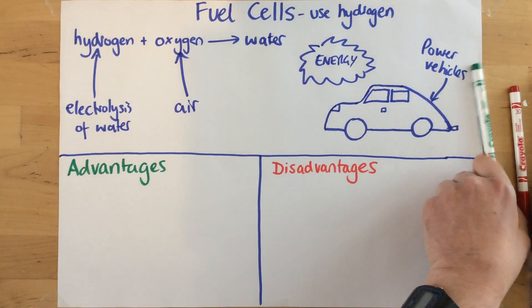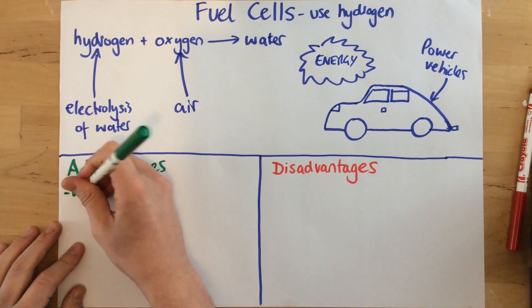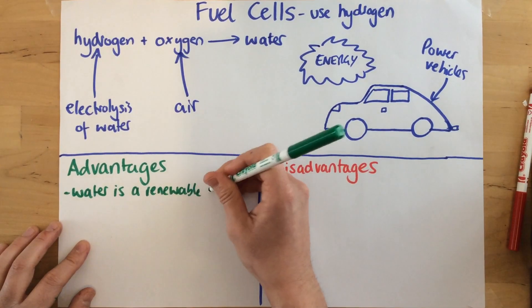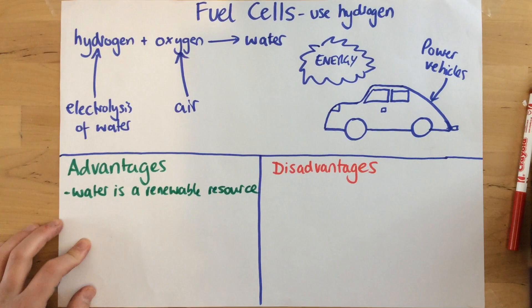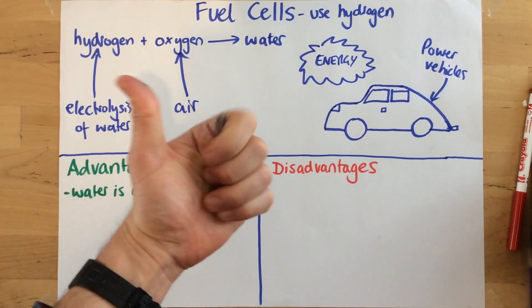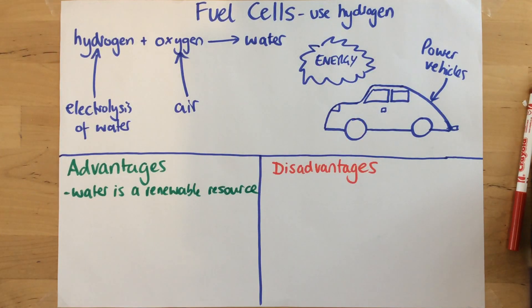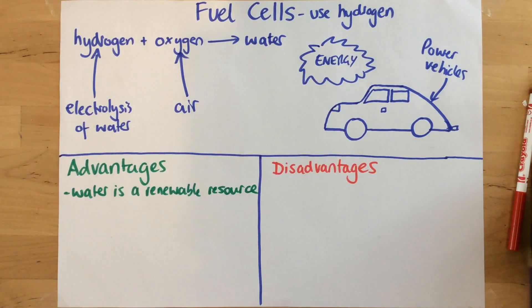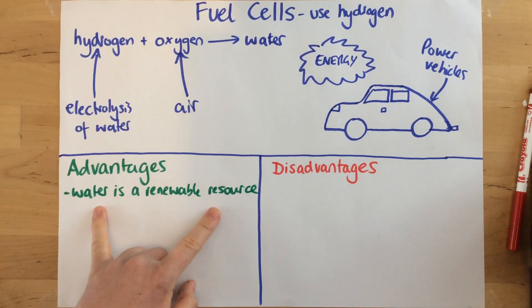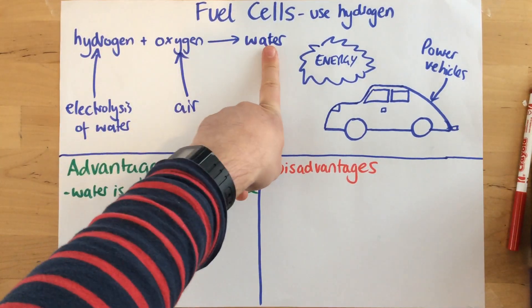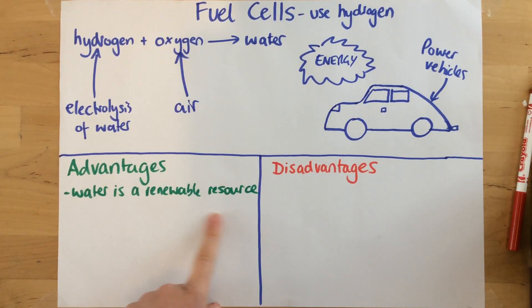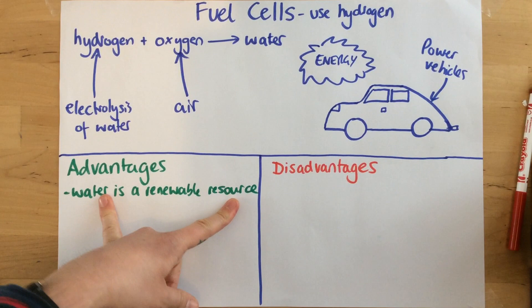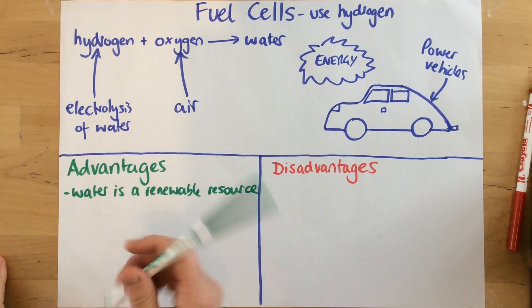Now let's look at the advantages of fuel cells. The first massive advantage is that water is a renewable resource. Currently, most cars use petrol or diesel that they burn — these come from fossil fuels and they are running out. Once we burn fossil fuels, we can't replenish them. Whereas with this reaction, we produce more water, so it's a renewable process, and there's a plentiful supply of water available to get our hydrogen from.